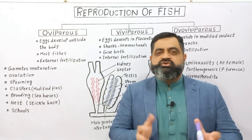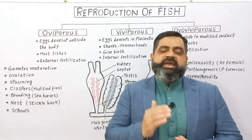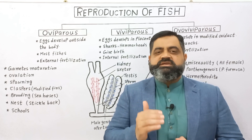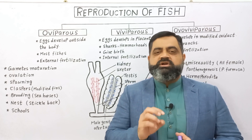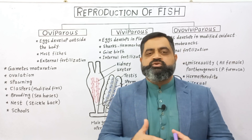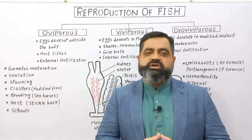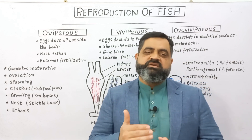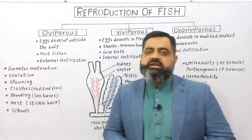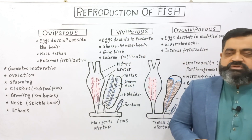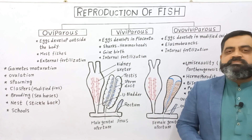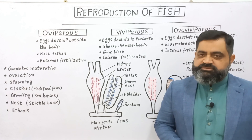As soon as the egg yolk finishes, the eggs develop into larvae, and these larvae develop into small tiny fishes which go into open water and start living their own life. The second category of reproduction is known as viviparity, or viviparous fish.